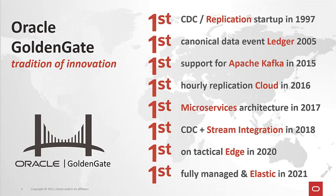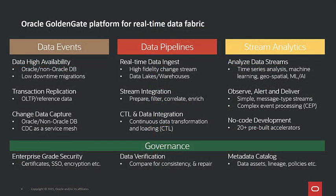The Oracle GoldenGate technology has been a leader around innovation for a very long time. The original GoldenGate technology came from a California-based startup founded in 1997 — actually the very first data replication startup in the world — focusing on canonical data event ledgers. First in the industry to support Apache Kafka, first to support an hourly metered cloud-based replication solution in 2016. The microservices architecture rolled out over four years ago in 2017, first to combine change data capture with streaming integration and streaming analytics in 2018, first to deploy on tactical edge solutions in 2020, and first to deploy a second-generation elastic and fully managed cloud service in 2021.